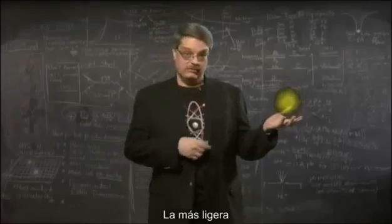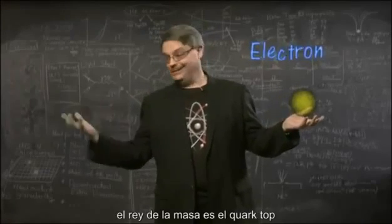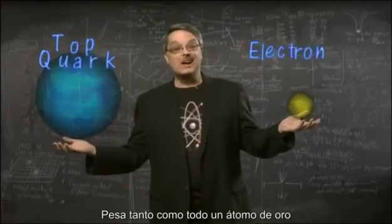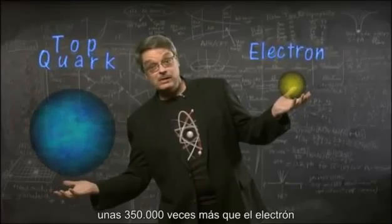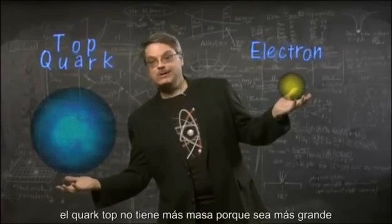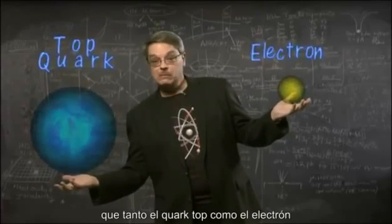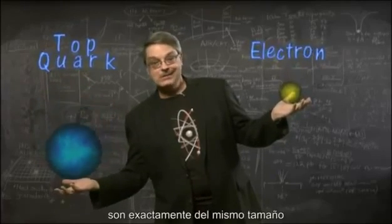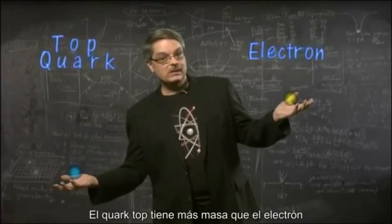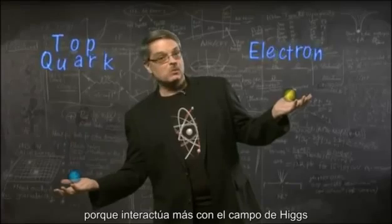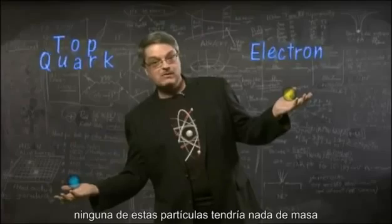The lightest of the familiar subatomic particles is the electron, while in the subatomic world, the king of mass is the top quark. It weighs about as much as an entire atom of gold — about 350,000 times more than the electron. The top quark is not more massive because it's bigger. In fact, we believe that both the top quark and the electron are exactly the same size — indeed, they both have zero size. The top quark is more massive than the electron simply because it interacts more with the Higgs field. If the Higgs field didn't exist, neither of these particles would have any mass at all.